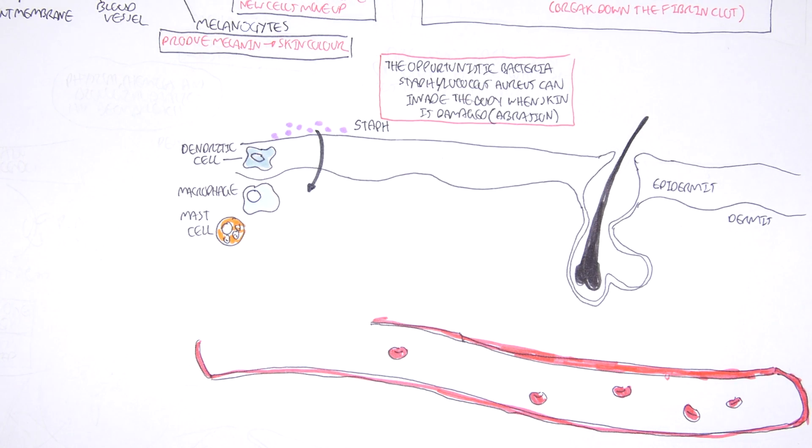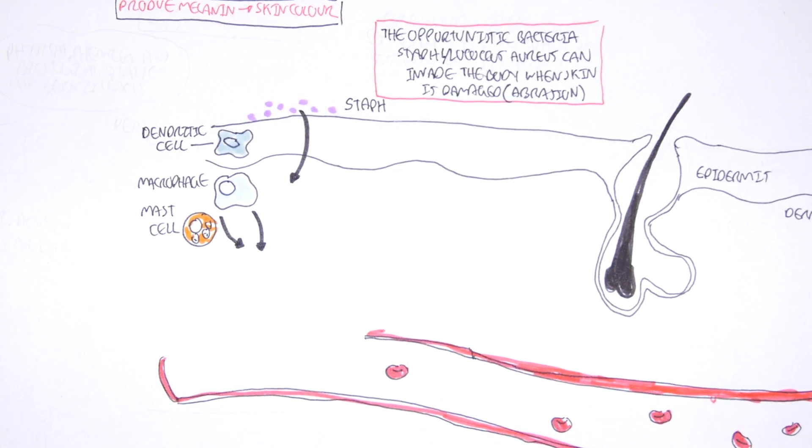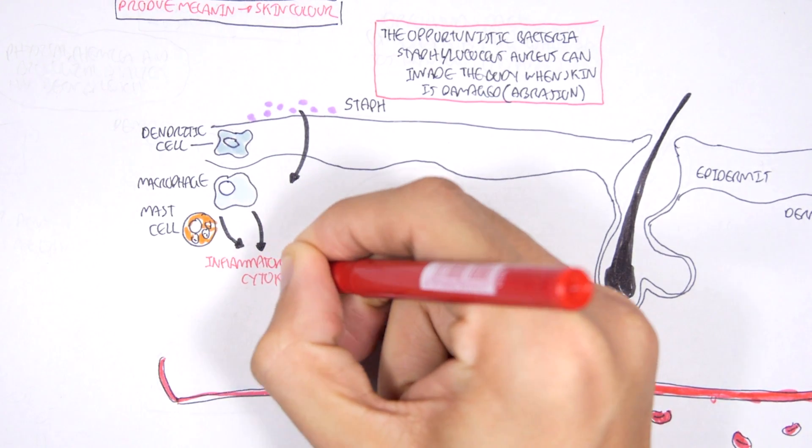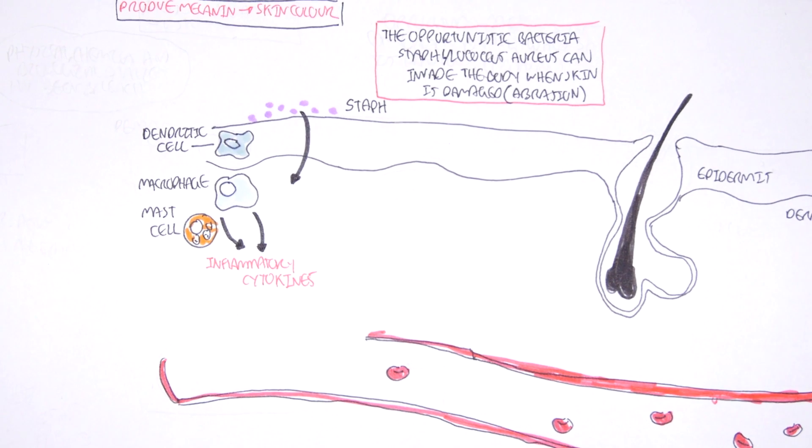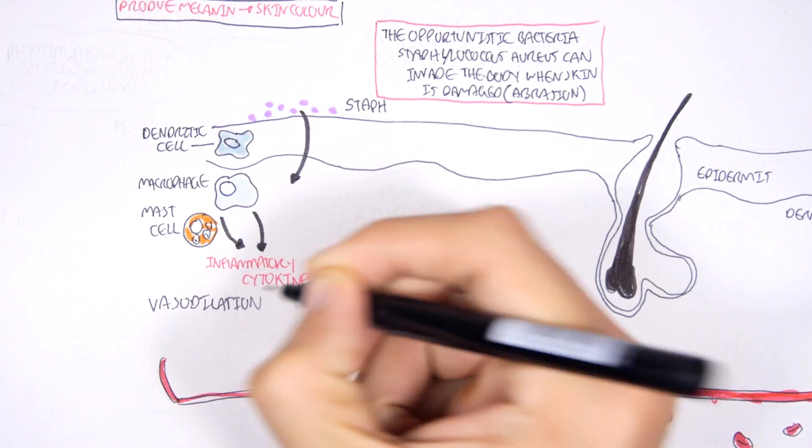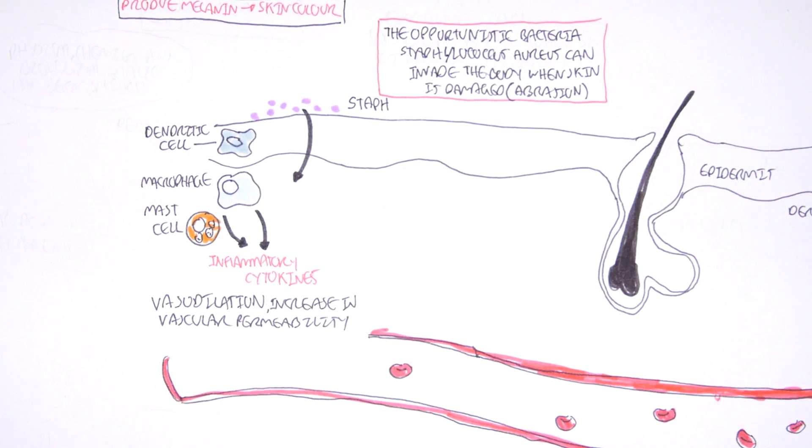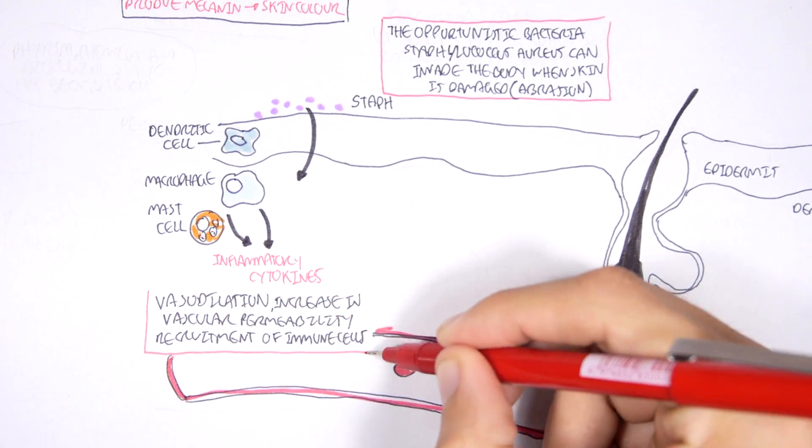So you can imagine, because of the entry point, the bacteria Staphylococcus aureus can enter the body. And when it enters the body, these immune cells residing here will detect it and will begin initiating an immune response. It will try to destroy the bacteria first. At the same time it will secrete inflammatory cytokines. These inflammatory cytokines include TNF-alpha, interleukin-1, as well as histamine from the mast cells. These inflammatory cytokines cause a number of things to happen, including vasodilation of the blood vessel, and cause an increase in vascular permeability, as well as recruiting more immune cells to the area.